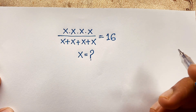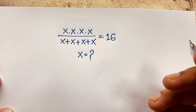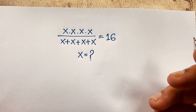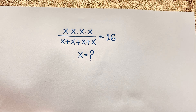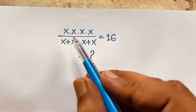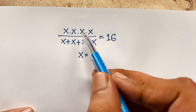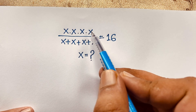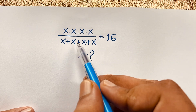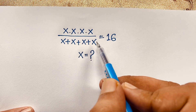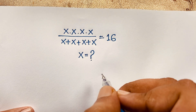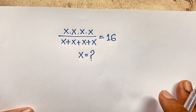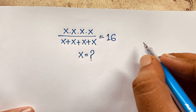Hello everyone, welcome to my YouTube channel. Today we have solved an interesting math olympiad question. It is an easy math olympiad question. This question is: x times x times x times x times x, over x plus x plus x plus x, is equal to 16. What is x? How to solve this interesting math problem?